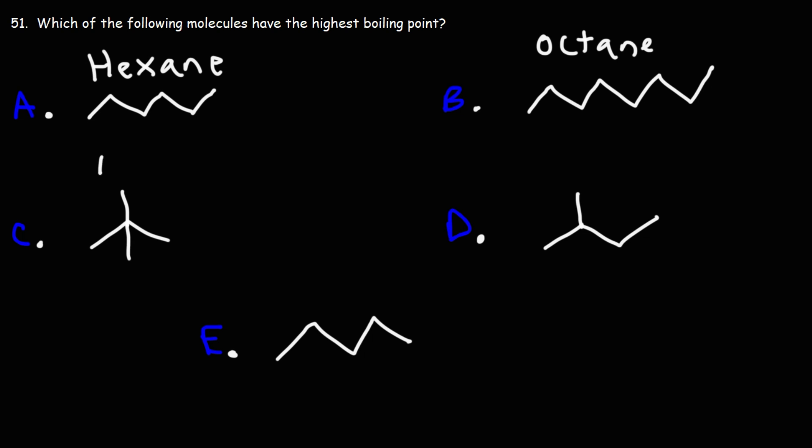Is it C, neopentane? Is it E, which is pentane, that's a 5-carbon chain? Or is it answer choice D? That's 2-methylbutane.